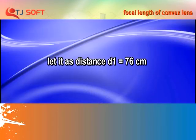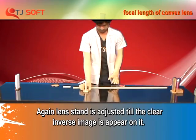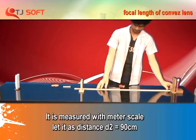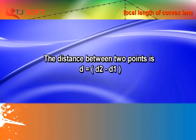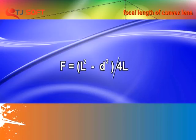Let this distance be D1 = 76 cm. Again, the lens stand is adjusted until a clear inverted image appears on the screen, and this position is measured with the Metroscale. Let it be D2 = 90 cm. The distance between the two lens positions is D = D2 minus D1. Substitute the values in the formula: F = (L² − D²) / 4L.